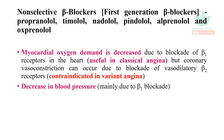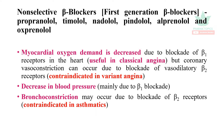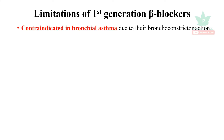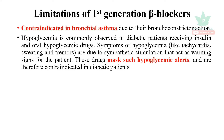These drugs decrease blood pressure due to beta-1 blockade. Bronchoconstriction may occur due to blockade of beta-2 receptors, so they are contraindicated in asthmatic patients. Limitations of first generation beta blockers: contraindicated in bronchial asthma; hypoglycemia is commonly observed in diabetic patients, and the warning signs — tachycardia, sweating, tremors due to sympathetic stimulation — are masked. So they are contraindicated in diabetic patients.